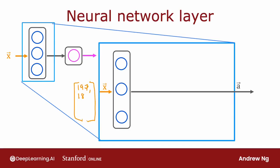This hidden layer inputs four numbers, and these four numbers are inputs to each of the three neurons. Each of these three neurons is implementing a little logistic regression unit, or a little logistic regression function.